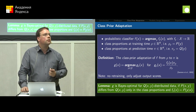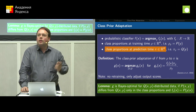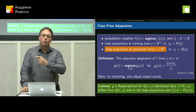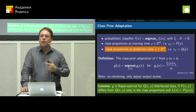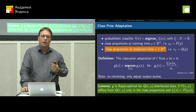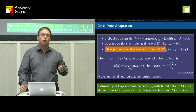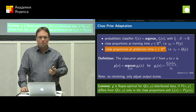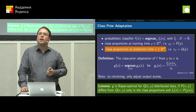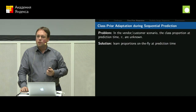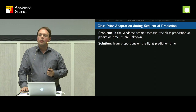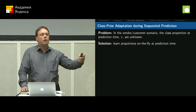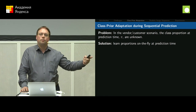What is the problem? Nobody gives us the class proportions at prediction time. If you are a shop owner, how would you know the class proportions of cucumbers in your store — how many pictures of cucumbers will the user take compared to tomatoes? This is not accessible in any form. So what do we do? We estimate these class proportions on the fly while applying our classifier. The class proportions are unknown — the solution is to learn the proportions while doing predictions on the fly. We have an iterative scenario where we're classifying images one after the other and adapting our class proportions over time.